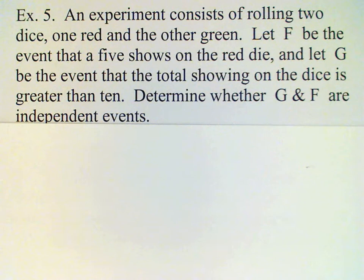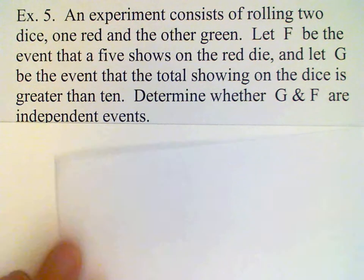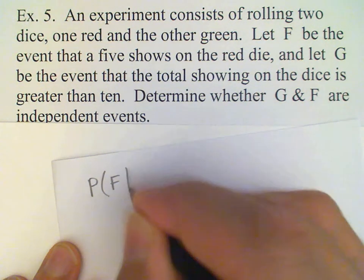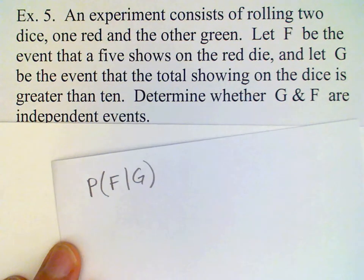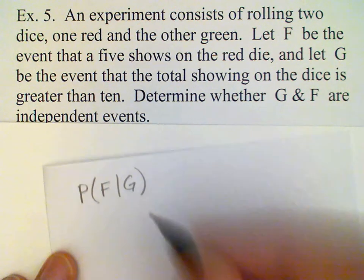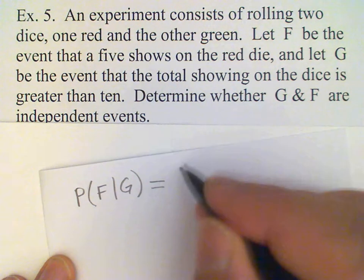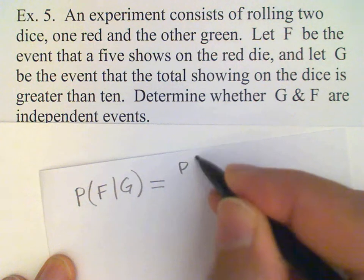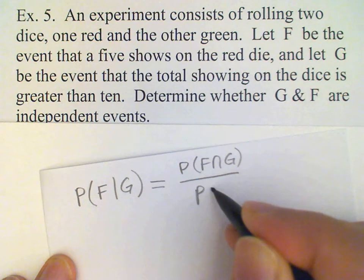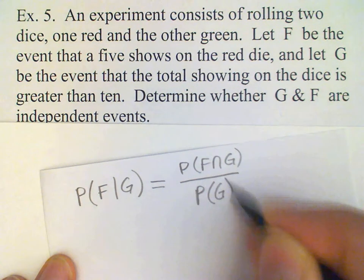If the two events are independent, then the conditional probability must equal the unconditioned probability. In particular, the probability of F given G must equal the probability of F. To find the probability of F given G, we use the definition of conditional probability: find the probability of the intersection of these events and divide by the probability of the conditioning event.